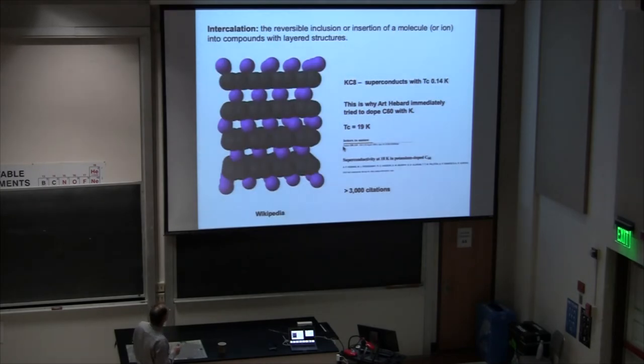One of the famous examples of intercalation has to do with where you put potassium into graphite. You form KC8, and this is a superconductor with a very low TC. This was discovered in the 70s. But then when carbon-60 was discovered, Art Hubbard immediately, very quickly, doped it with potassium because he knew that the graphene would superconduct when you put potassium with it. He found a nice 19K superconductor with carbon-60. This is low-hanging fruit. Art knew immediately what to do when he saw C60. We got to dope it with potassium.